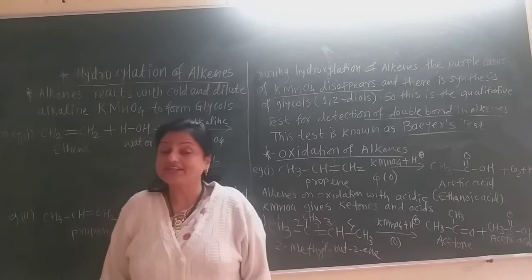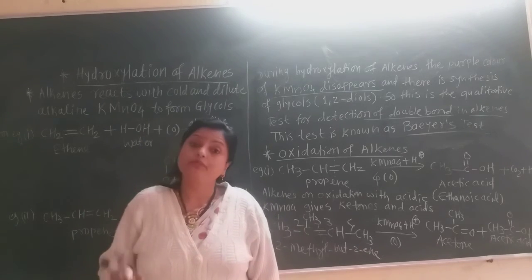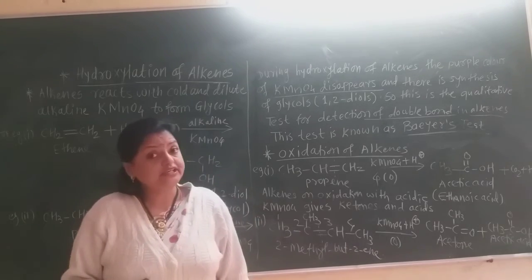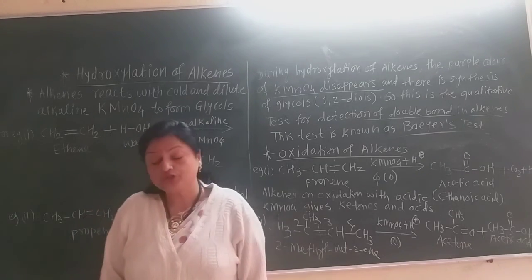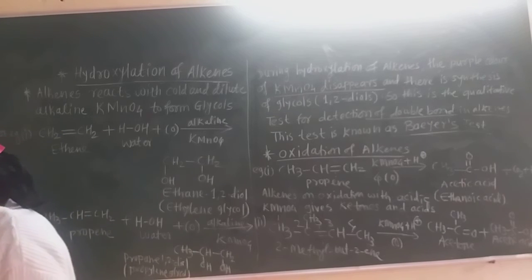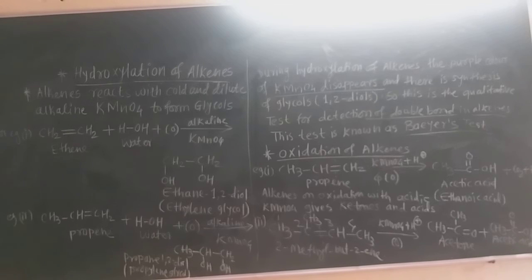These are the 2 important reactions: hydroxylation and oxidation of alkenes using potassium permanganate. For hydroxylation, alkaline KMnO4 is used. For oxidation, acidic KMnO4 is used. On acidic oxidation, these alkenes give ketones and carboxylic acids. This is the main reaction.